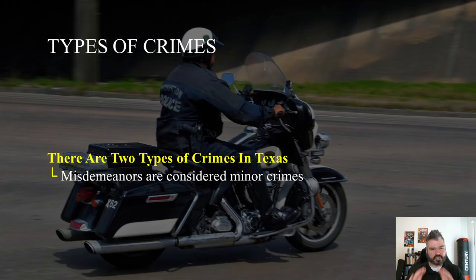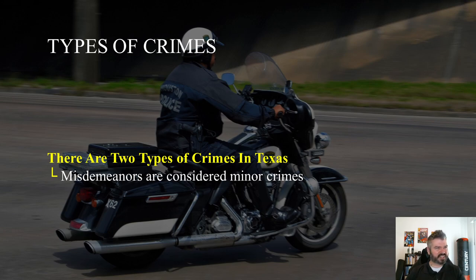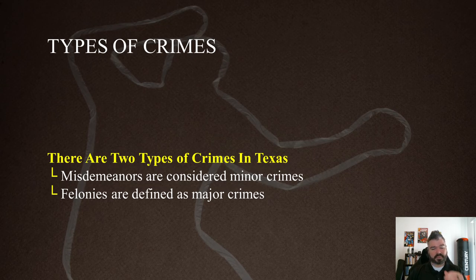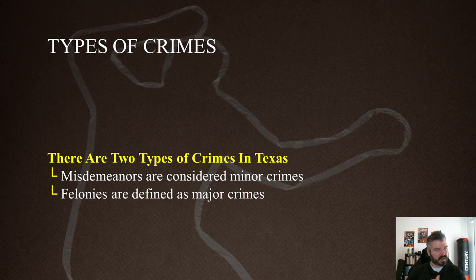There are two types of crimes in Texas. First, we have misdemeanors, which are considered minor crimes — for example, getting a speeding ticket. Then we have felonies, which are defined as major crimes — an example would be murder. Within both types of crimes, misdemeanors and felonies, we see a tier system of offenses.